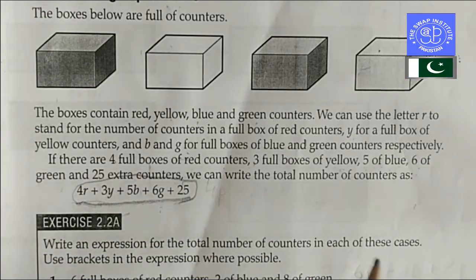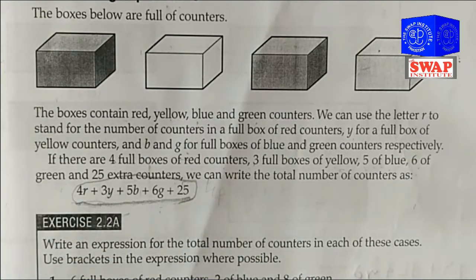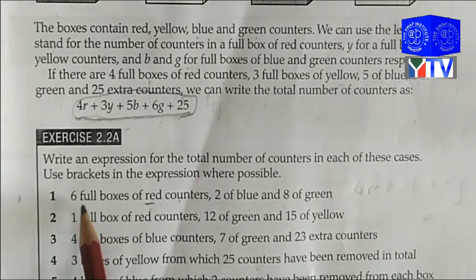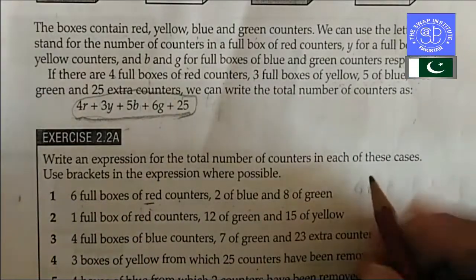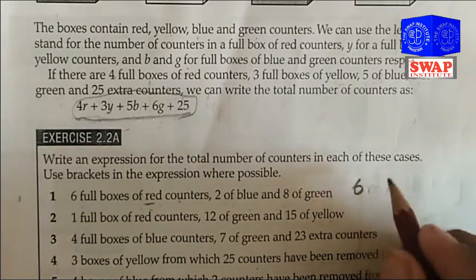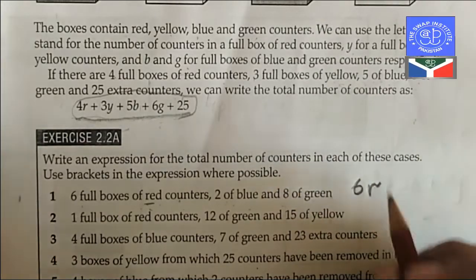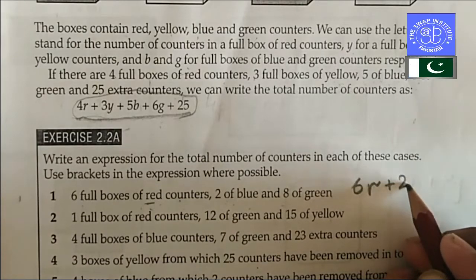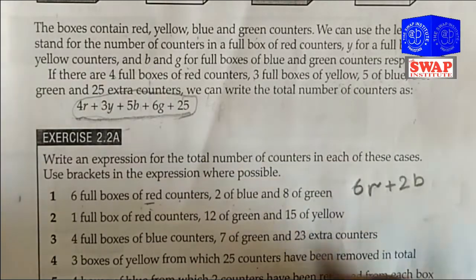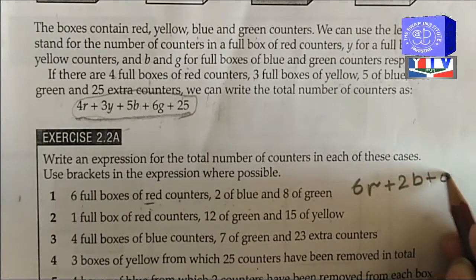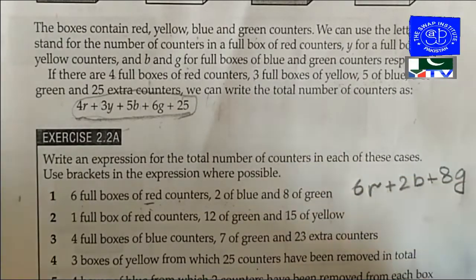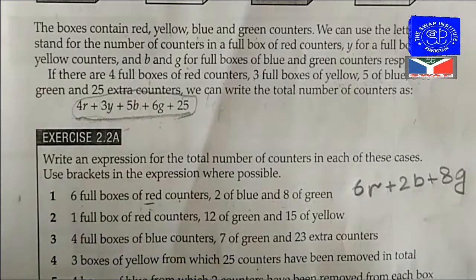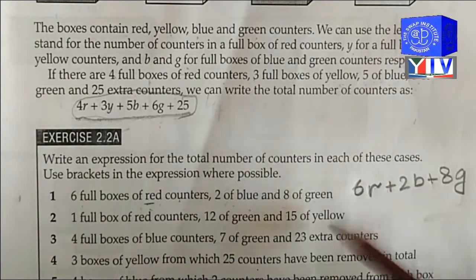It's really very easy to do. Now let's see one example from exercise 2.2a. Six full boxes of red counters means 6r. Two of blue means plus 2b, and eight green means plus 8g. You can see it's the same as they have explained in the examples.